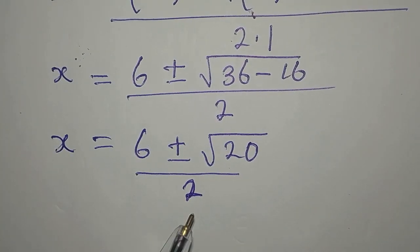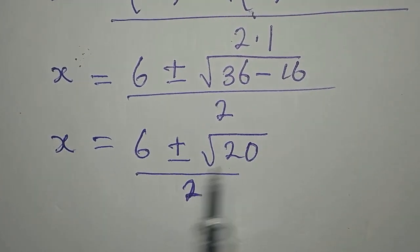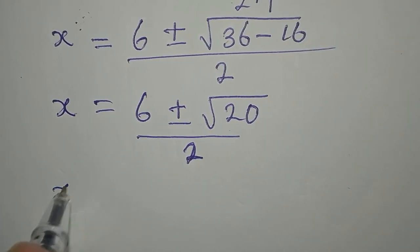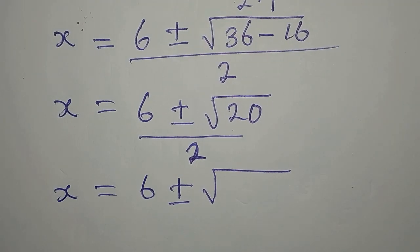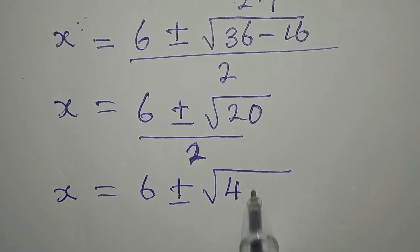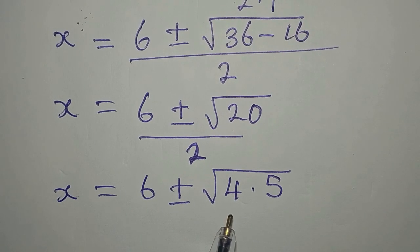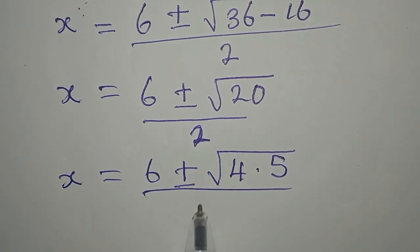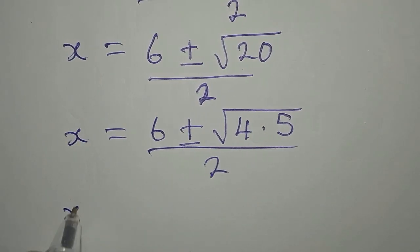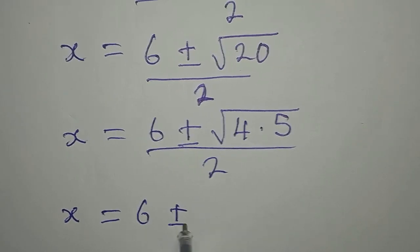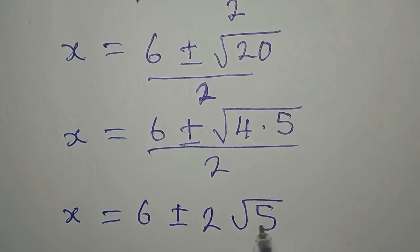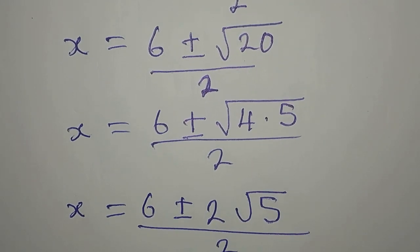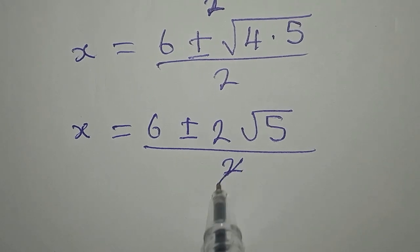We might be tempted to divide by 2 already, but that would be wrong — we need to extract a factor from under the radical first. We notice that 20 is the same as 4 times 5, so we write square root of 4 times 5. Since 4 is a perfect square, its square root is 2, so we have 6 plus or minus 2 root 5, all divided by 2.